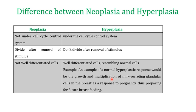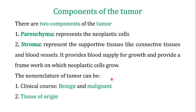When you talk about the components of tumors, there are two components: the parenchyma and the stroma. The parenchyma consists of the neoplastic cells — the abnormally dividing cells. The stroma represents the supportive tissue, like connective tissue and blood vessels, providing blood supply and a framework on which the neoplastic cells grow. Stroma cells are non-neoplastic cells, meaning they are not dividing excessively.